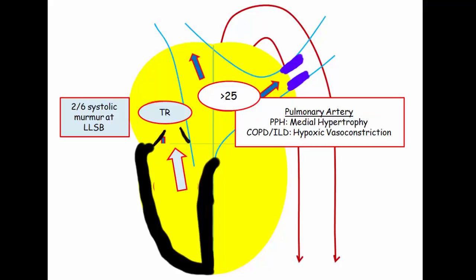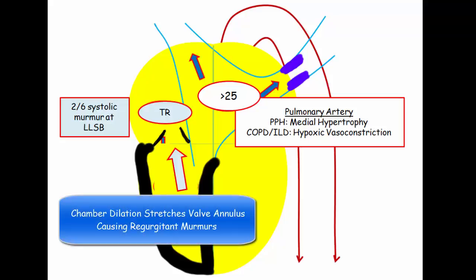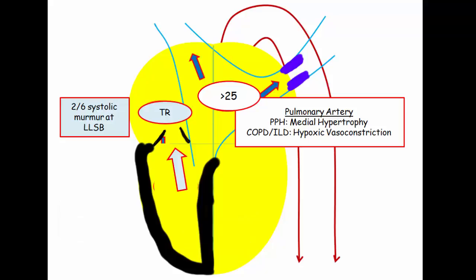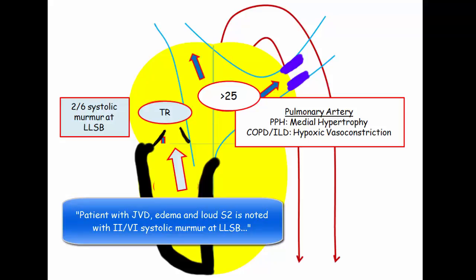Be aware of the consequences of chronically elevated pulmonary artery pressures. The right heart is designed to be a low-pressure circuit. To compensate, the right ventricle must either hypertrophy or dilate. The dilated ventricle will stretch the tricuspid annulus—just as occurs in dilated cardiomyopathy in the left chamber—resulting in regurgitant murmurs. A dilated tricuspid annulus results in a systolic murmur heard best at the left lower sternal border. Tricuspid regurgitation is a consequence, not a cause, of pulmonary hypertension.